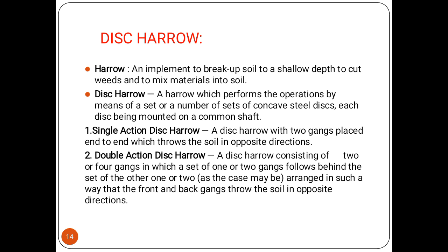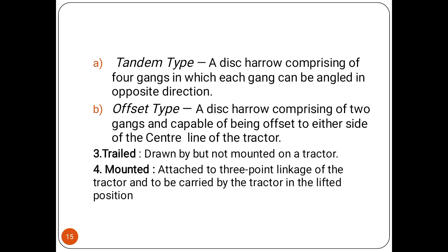The double action disc harrow consists of two or four gangs in which one or two gangs follow behind the other one or two, arranged so that the front and back gangs throw soil in opposite directions. The tandem type disc harrow comprises four gangs in which each gang can be angled in opposite directions. The offset type disc harrow comprises two gangs and is capable of being offset to either side of the centerline of the tractor.